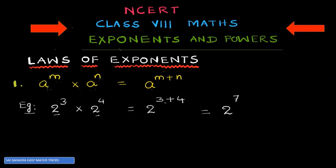Next, formula number 2: a raised to the power of m divided by a raised to the power of n. In multiplication we add the exponents; in division we do subtraction — first exponent minus second exponent, that is m minus n.